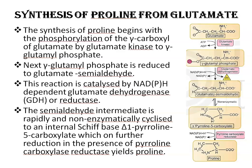Proline is a cyclized derivative of glutamate. In the first step of proline synthesis, as you can see here, ATP reacts with the side chain carboxylic group of glutamate to form an acyl phosphate, which is reduced by NADPH or NADH to glutamate gamma-semialdehyde. This intermediate then undergoes rapid spontaneous cyclization and is reduced further to yield proline.